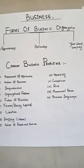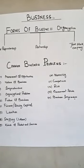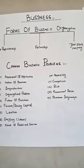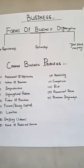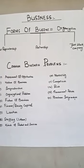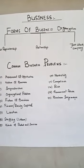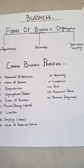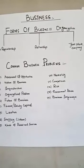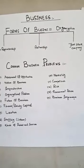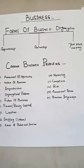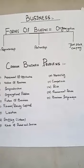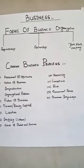Number twelve is risk. Risk means uncertainty. In business, the general rule is: more risk, more return. Risk is defined as the difference between the expected and actual situation.